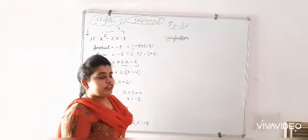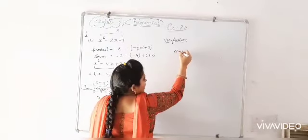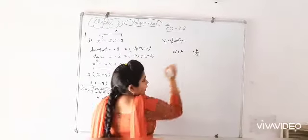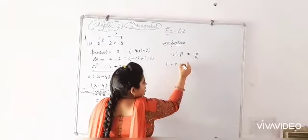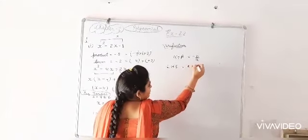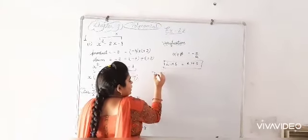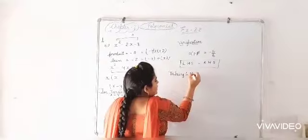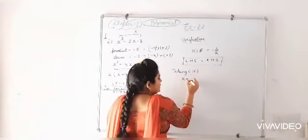Now we have to do verification. For verification, we have to find alpha plus beta is equal to minus b by a. In verification, we have to show that left hand side is equal to right hand side. This we have to prove or verify. Then taking left hand side.